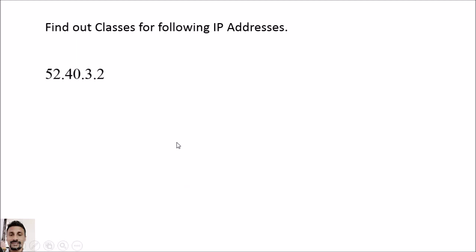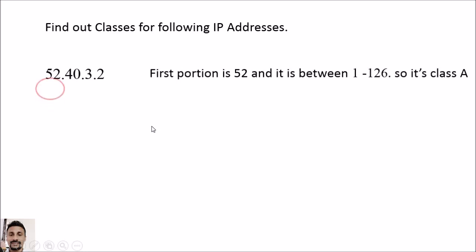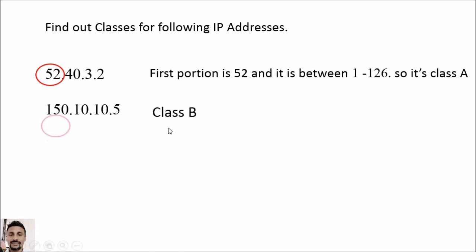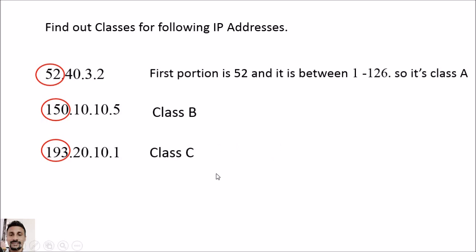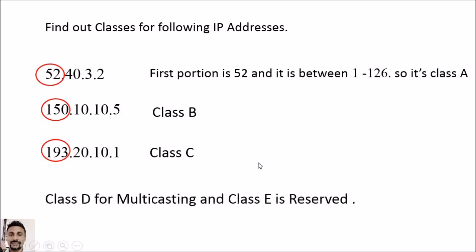For example, 52.40.3.2 is Class A because 52 is between 1 and 126. An address starting with 150 is Class B, and one starting with 193 is Class C. Class D is used for multicasting and Class E is reserved — neither is used for general purposes.